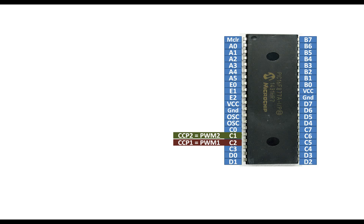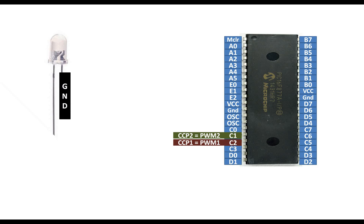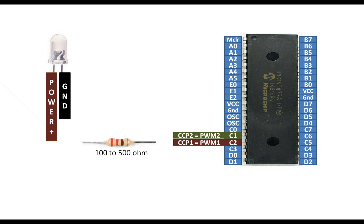I will be using an LED to demonstrate how it controls brightness using frequency. This is a basic 5mm crystal type LED, easily available in the market. It has two pins — the shorter pin is always the ground and the longer pin is the power pin. To interface this LED with the PIC, for safety I am going to use a 220 ohm resistor. You can use any resistor from 100 to 500 ohm.